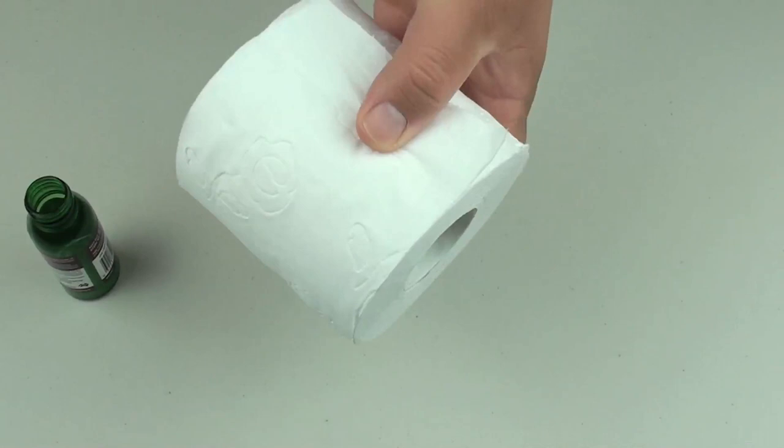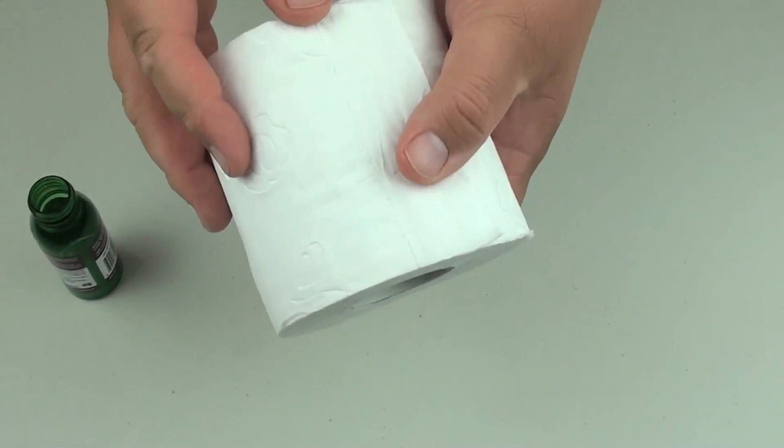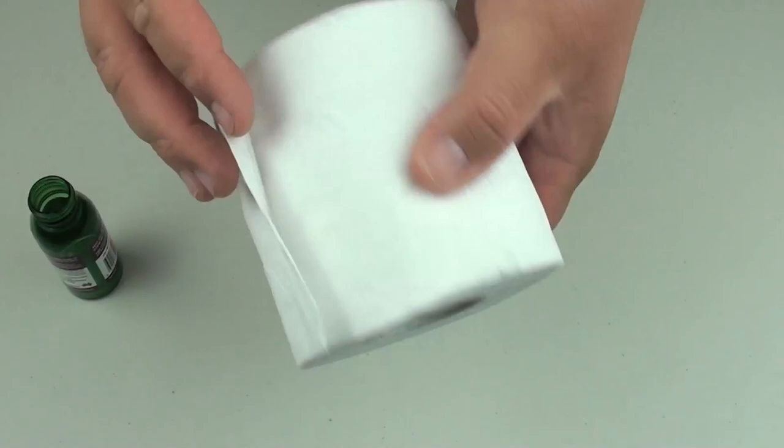Now what that is going to do is it is just going to coat the cardboard part of the middle. So this way you are going to have a lovely scented toilet roll for your bathroom without the worry of having the scent throughout the entire paper.